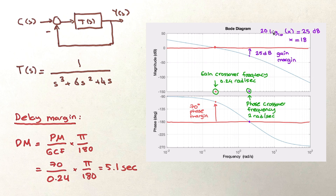The gain margin is 25 decibels. Using the conversion formula — solving 20 log₁₀(x) = 25 dB gives x = 18. This means if you multiply the loop transfer function by 18, your system will be close to instability. So you can increase this gain by a factor of 18 before going unstable. This is an important metric because at this location you often have actuators, which can vary in effectiveness — amplified or reduced. A gain margin of 18 is quite generous.